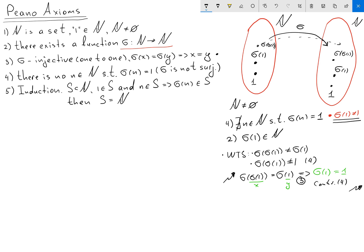What do we got so far? We got that our set N is actually going to be equal to 1, sigma of 1, sigma sigma of 1, and so on.